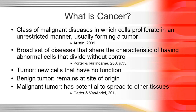The first thing we want to talk about is what is cancer. It's a class of malignant diseases, but what they all have in common is that you have uncontrolled cell growth. The cells proliferate in an unrestricted manner. This forms a tumor — abnormal cell growth. A tumor is a collection of cells that actually have no function, and tumors come in two types: benign tumors and malignant tumors. The malignant tumors are the cancer tumors.